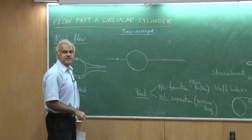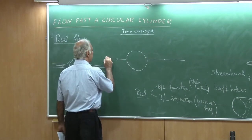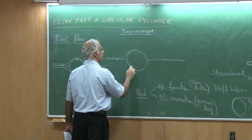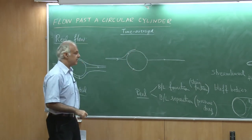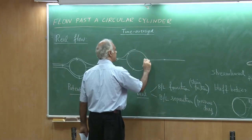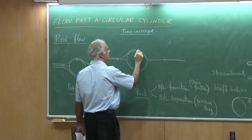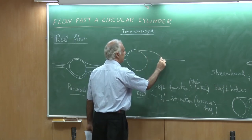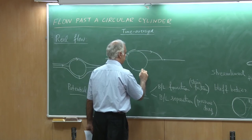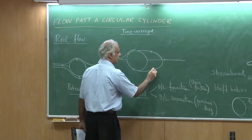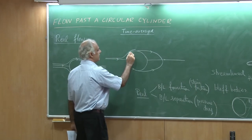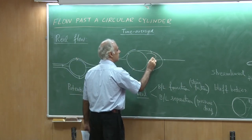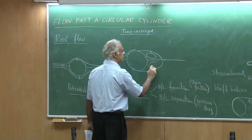Something interesting happens to other streamlines. The flow goes up to a point and then it separates. The best way to draw separation is to look at the surface streamline — after reaching some point close to the shoulder of the cylinder, the streamline separates. What about the flow inside? This is a recirculation zone — the flow inside is stuck there, so you get vortices.